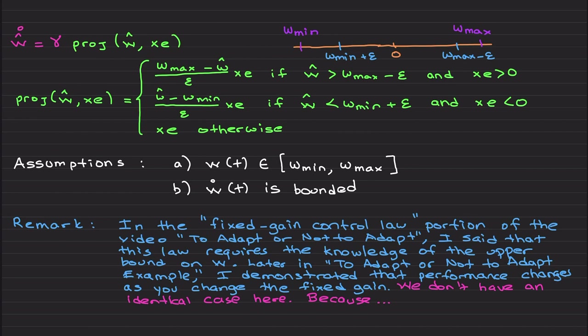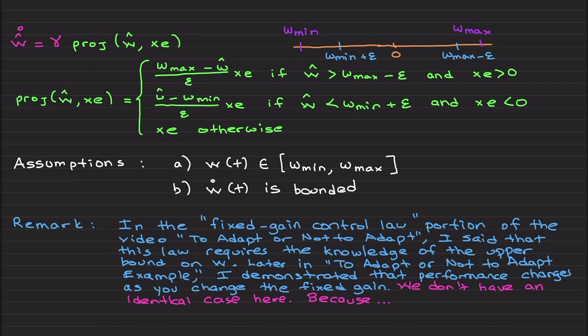I will try to explain these things in plain terms so that everyone can understand. Instead of using ŵ̇ = γ · x · e, I am going to use the projection operator. This notation means that we are using x·e to drive the estimation ŵ, but we are also projecting ŵ — meaning we are applying projection based on the input we receive.